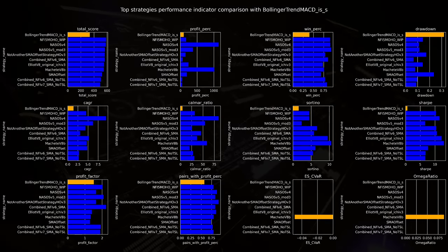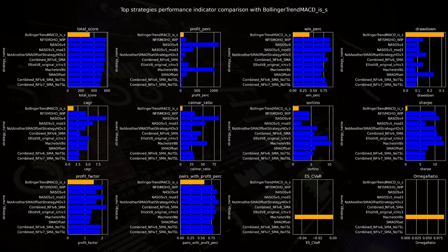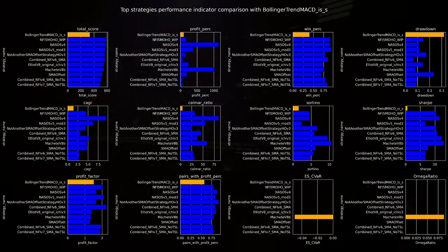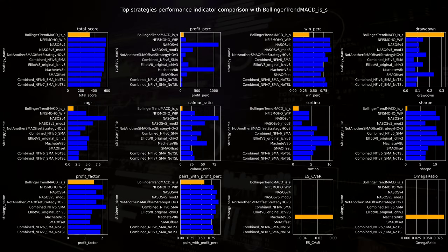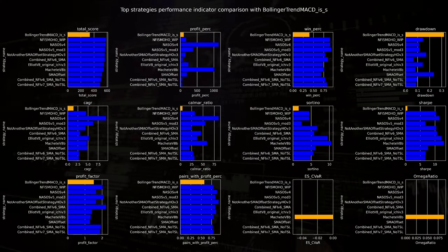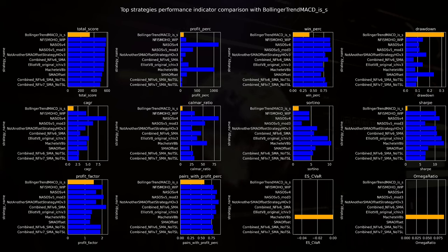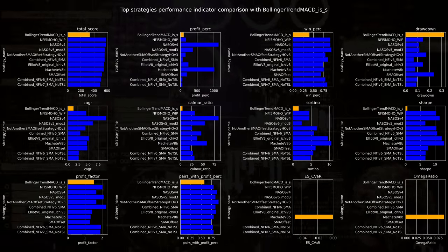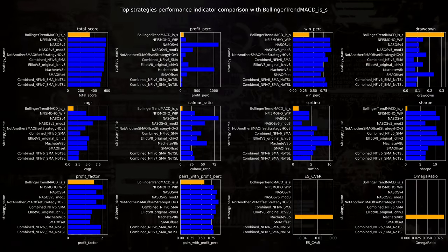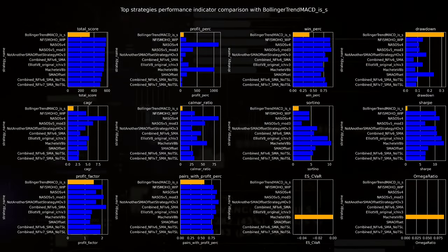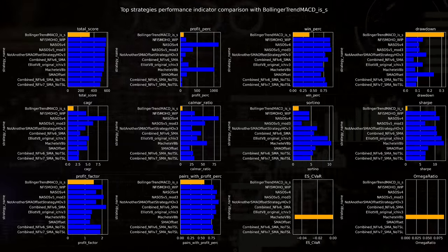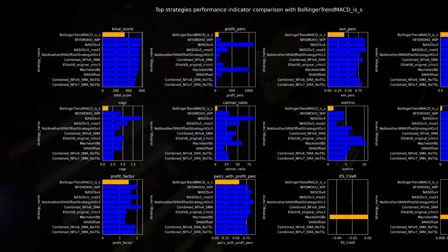For example, the low profit percentage, win percentage, Calmar, Sharpe, and more. But you also have to be aware that this is a bit like comparing apples with pears at the moment, since this is a swing trading strategy on higher timeframes for manual trading, and the other better-performing trading algorithms are more for low timeframes, have high complexity, and are not suited for manual trading.